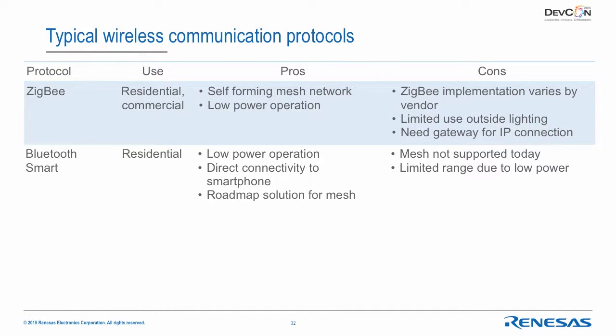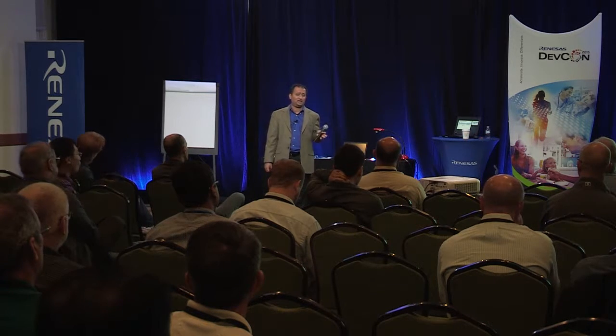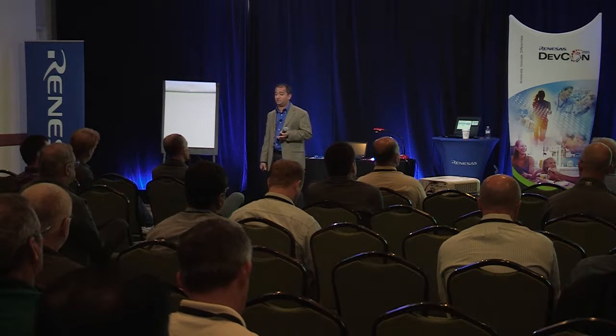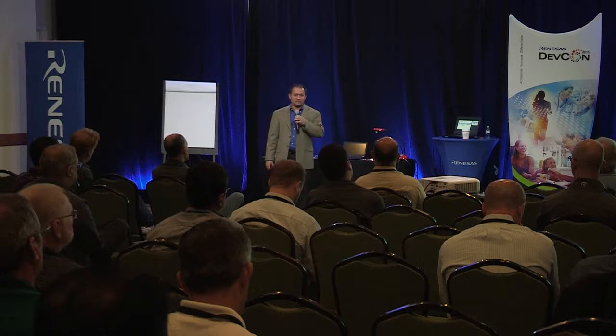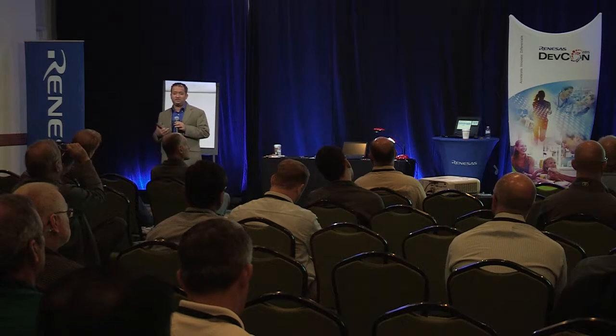Bluetooth Smart is growing because every smartphone has it — you can talk directly from the smartphone to the bulb without a gateway box, and it operates at very low power which is important when lights are off. Challenges: it doesn't yet support mesh (roadmap exists but further out), meaning you must address lamps individually, which doesn't scale well for buildings. Range is also limited — Bluetooth Smart started in the wearables/activity monitor space, so reaching across a large building can be challenging.